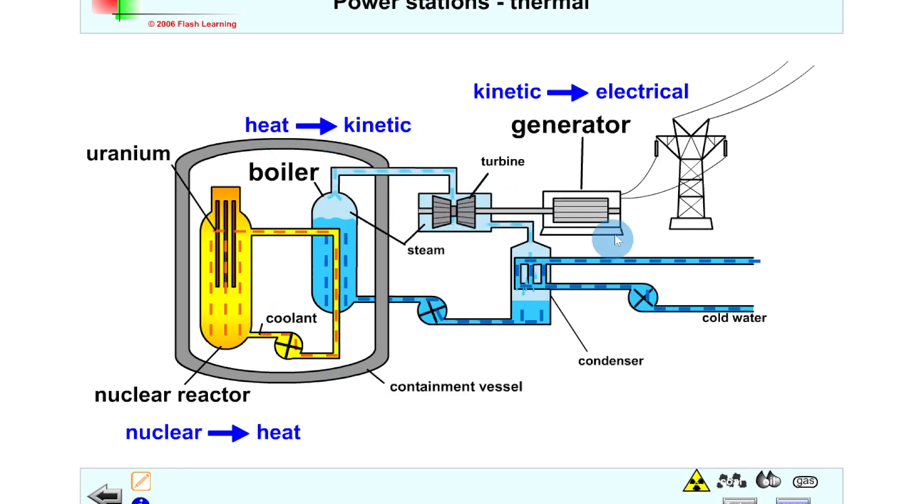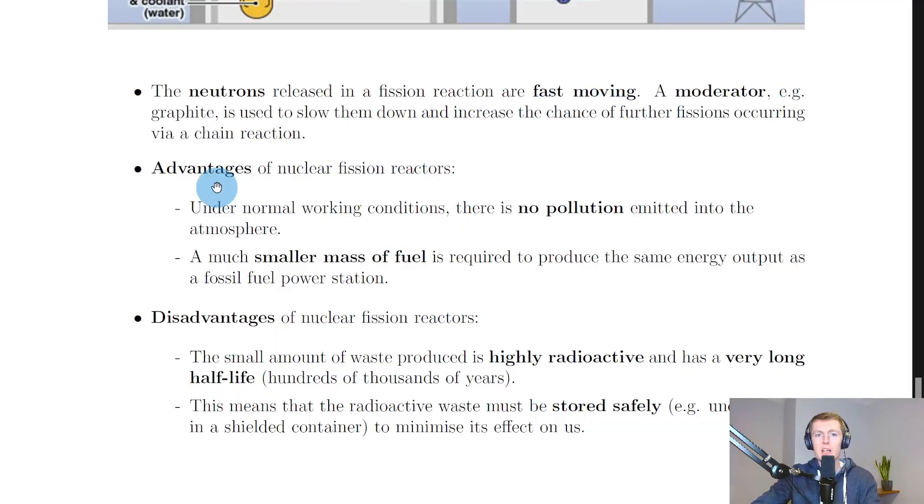Going back to the notes, it says the neutrons released in a fission reaction are fast moving, and we saw that in the theory video for the chain reaction. A moderator, for example graphite, is used to slow them down and increase the chance of further fissions occurring via a chain reaction. So we use this material called a moderator to slow down neutrons and to prevent more fission reactions from occurring, and that allows us to control the chain reaction going on. So I'll just show you another simulation to help you visualize this.